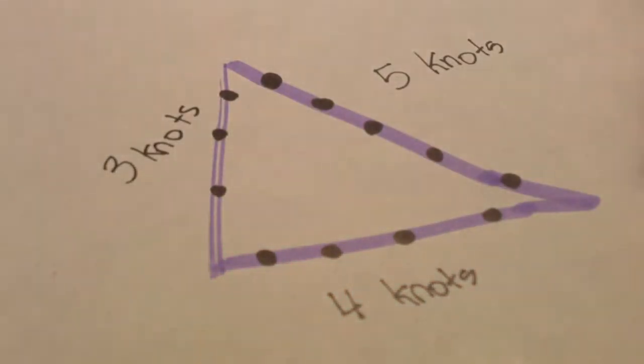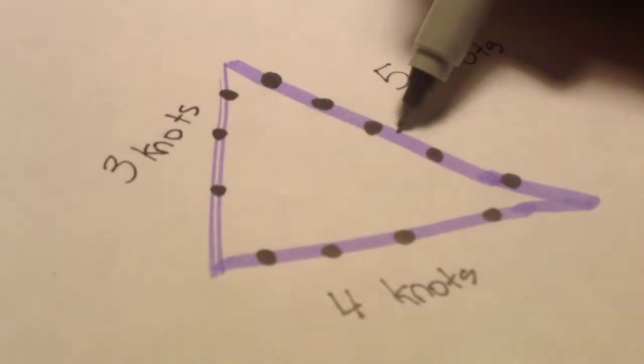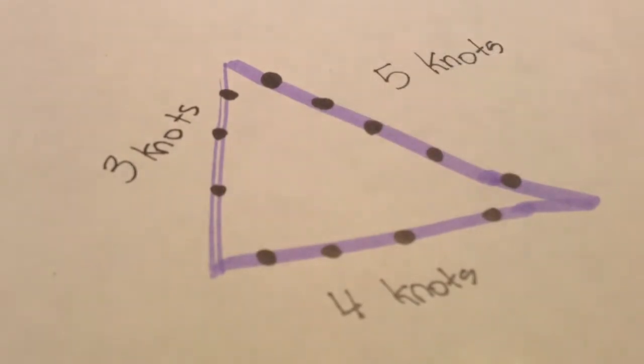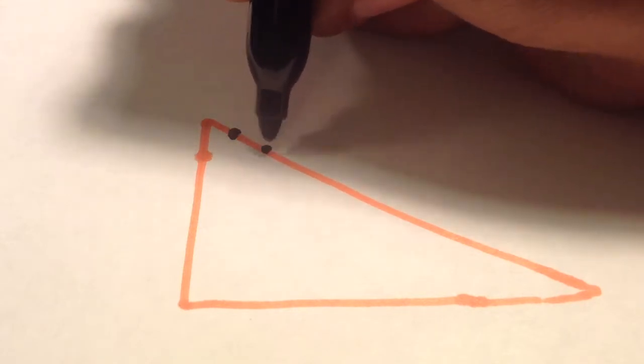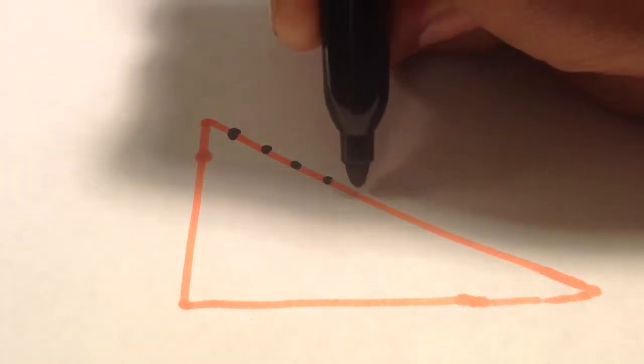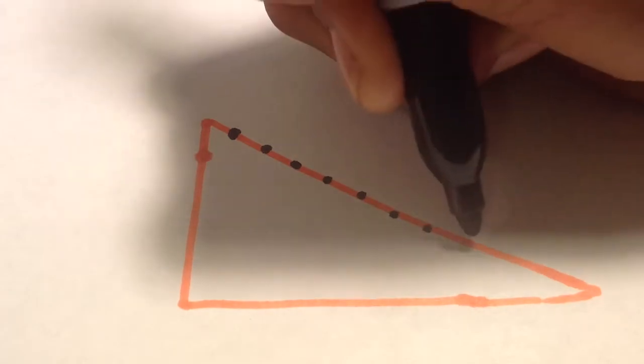Now you have your 3 to 4 to 5 ratio displayed. Now I'm going to show you how you can use the number of knots in the rope to plug it into the Pythagorean theorem.